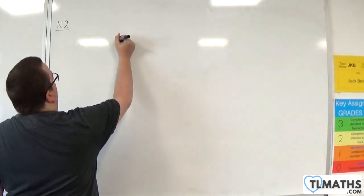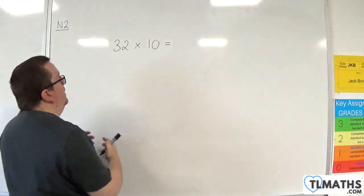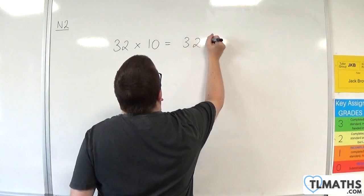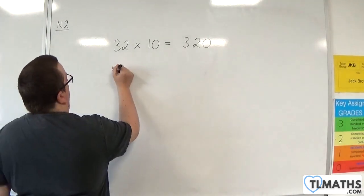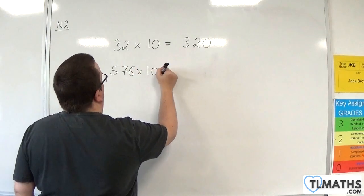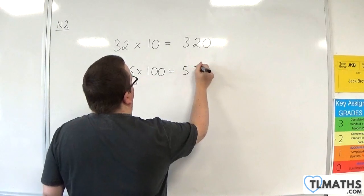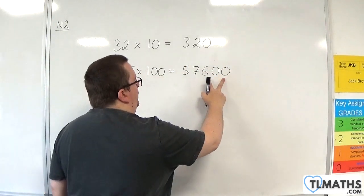If you've got something like 32 and you times it by 10, then essentially you're sticking a zero on the end. So, 320. And if you've got something like 576 and you're multiplying it by 100, you're essentially sticking two zeros on the end and getting 57,600.